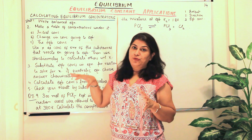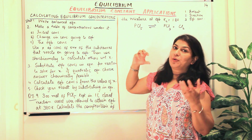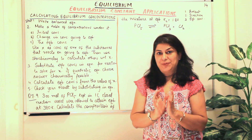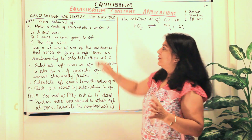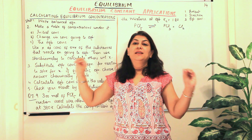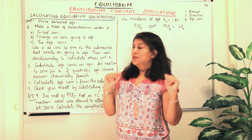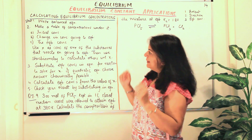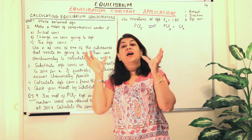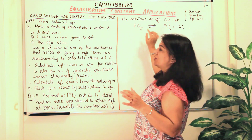What do we do for this? It is like solving a mathematical problem. We first write down a balanced chemical equation — the first step is to write down the balanced chemical equation with proper stoichiometric coefficients. Then you make a table of concentrations under the equation.